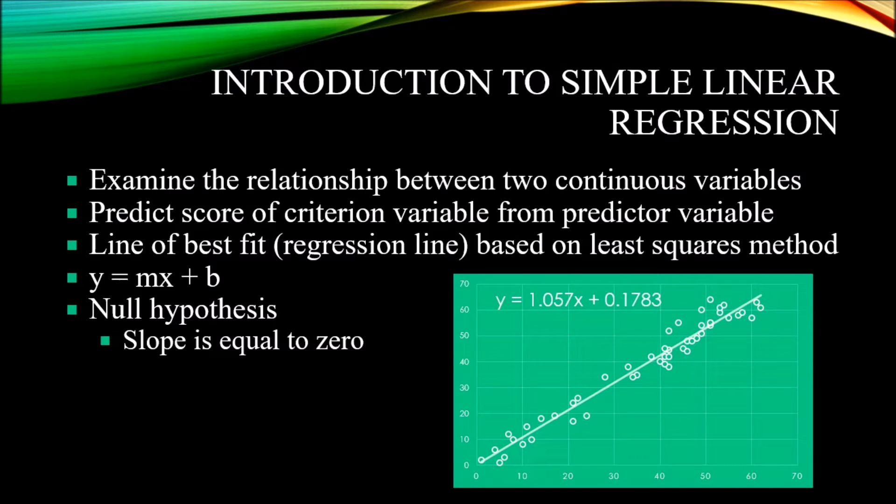We use regression to predict the score of a criterion variable, an outcome variable, using the score of the predictor variable. So let's use an example. Let's say that we have some specific assignment involved in a counseling training method. And after the training course, after the assignment is complete,